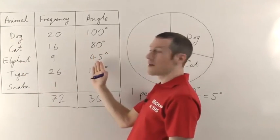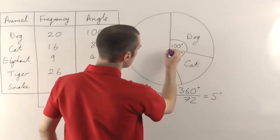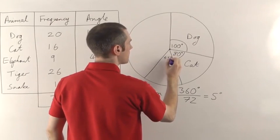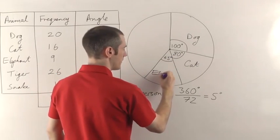Elephant, next up, needs to be 45 degrees. So we'll do another one. That's going to be about there. 45 degrees. Elephant.